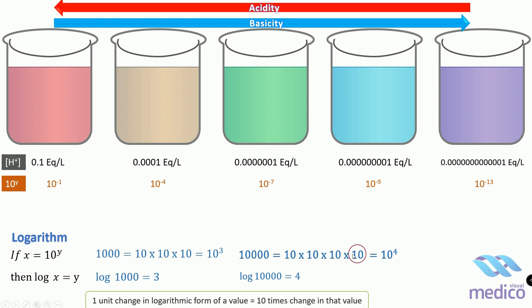Another example: log 0.0001 is also written as 10 raised to power minus 4. Log of this value, 10 raised to power minus 4, is simply minus 4. Now we can write down the logarithmic form of hydrogen ion concentration like this: this solution has minus 1, minus 4, minus 7 and so on.